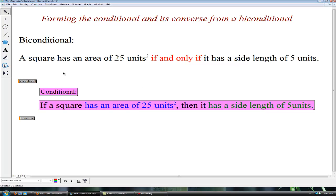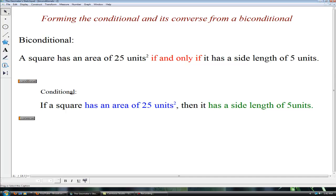Our conditional would be to take the hypothesis and conclusion and form an if then statement. If a square has an area of 25 square units then it has a side length of 5 units.